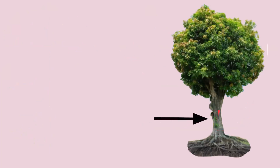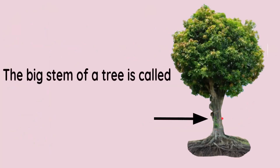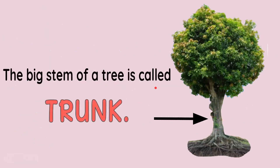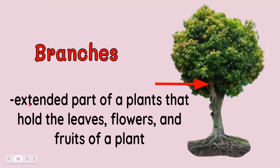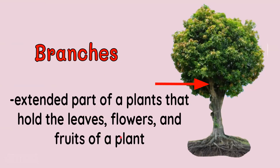Now let's go to the mango tree. The big stem of a tree is called a trunk. This part is a trunk. How about this part? This is a branch, or branches. The branches are the extended part of a plant that hold the leaves, flowers, and fruits of a plant.